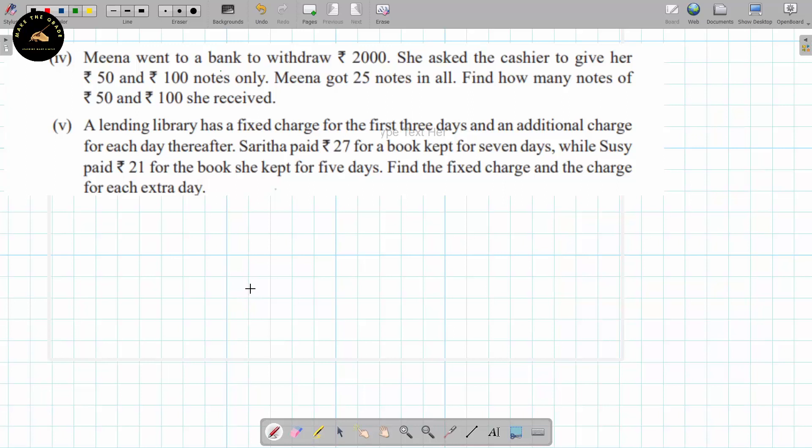So the question is: Meena went to a bank to withdraw 2000 rupees. She asked the cashier to give her 50 and 100 rupee notes only.